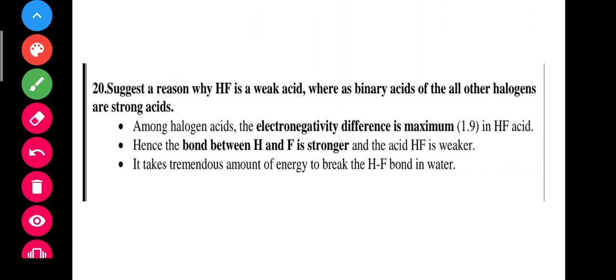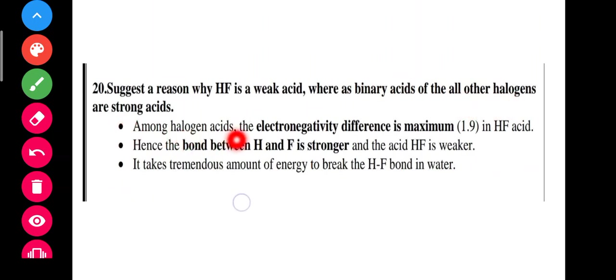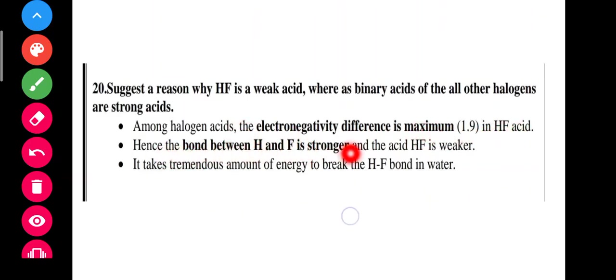20th question: suggest a reason why HF is a weak acid whereas all other binary halogen acids are strong acids. Among halogen acids, the electronegativity difference between H and F is maximum. Also, the bond between H and F is stronger, which makes HF a weak acid.